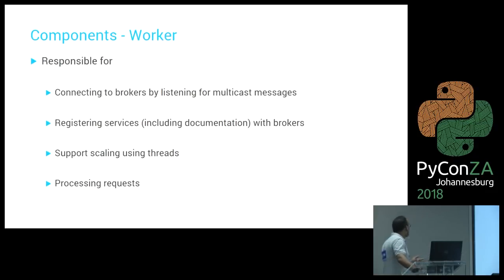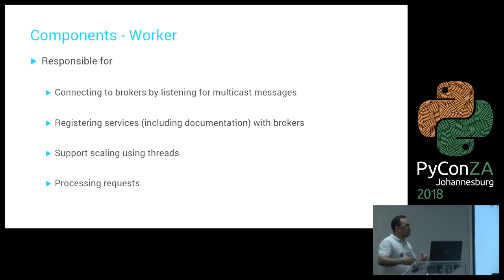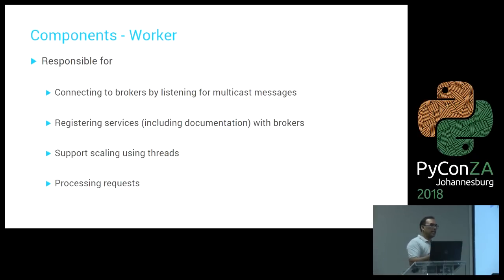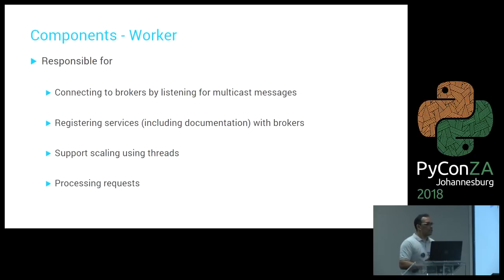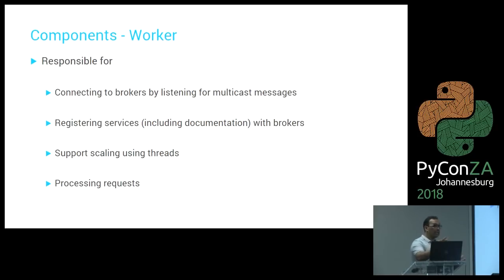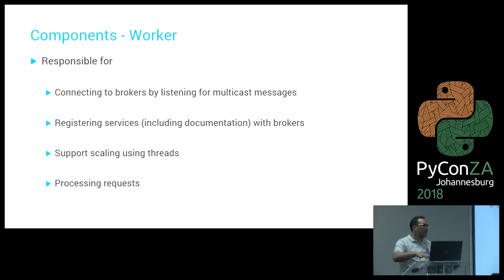The worker's main task is to listen for those multicast messages from the broker. When a worker starts up, it asks: are there any brokers available? If so, it connects to them automatically — we didn't need to configure the worker with the broker's IP address or port. In production we could literally start up a new server, deploy workers, and they'd connect to the broker automatically. If we saw load where certain services weren't performing, we could scale up very quickly. The same goes for a broker — start another one, it broadcasts itself, and all running workers automatically connect to it.